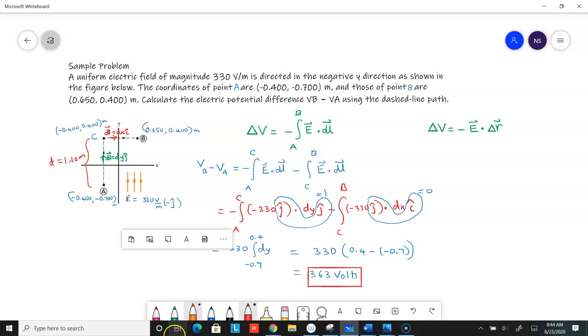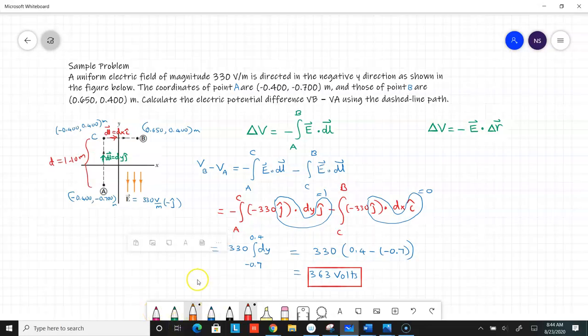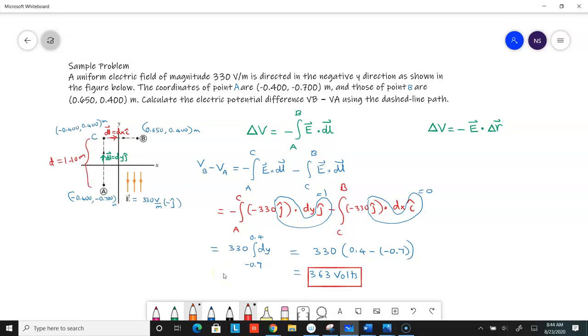So all we needed was, we could have just said that delta V is negative E times D. So that is negative ED. And so you could have said, all I need to do is this is 330 volts per meter. I multiply that by the distance that matters that's along the electric field. So that's your negative 363 volts. So this is the delta V going from B to A. If you really just want the absolute value of that, you can get that 363 volts.